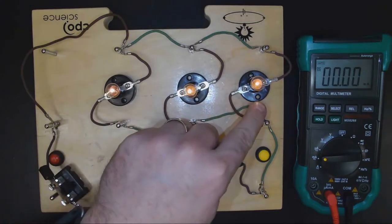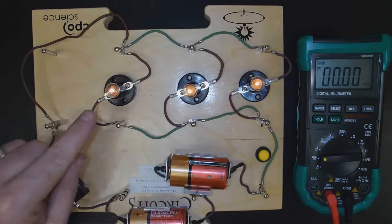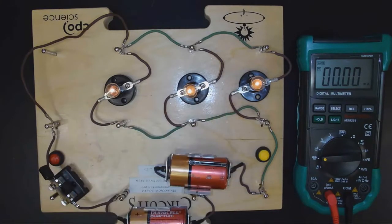Alright, I have a parallel circuit with three light bulbs, and the switch is on, and you can tell that the electrons are flowing because the light bulbs are lit.